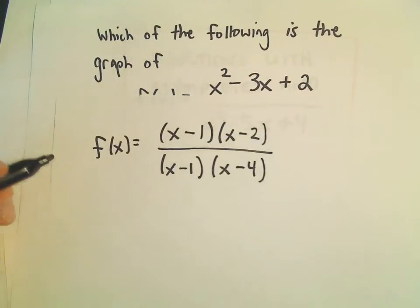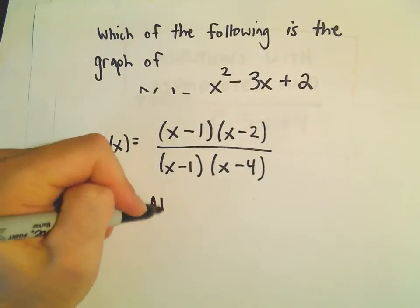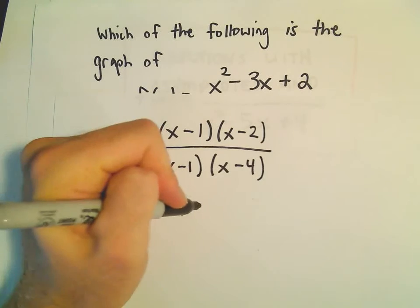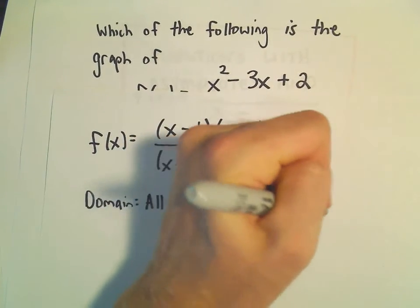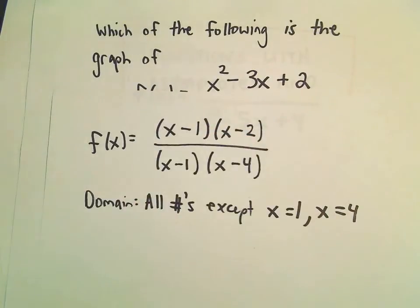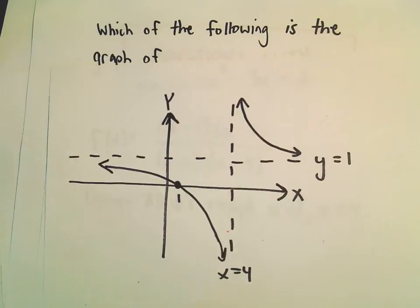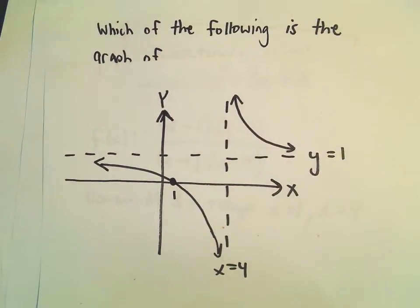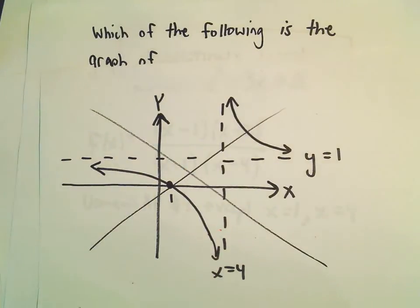Okay, so notice the domain will be all numbers. It'll be all numbers except x equals 1 and x equals 4. So I think that would already even rule out our last graph because there's no holes, this one's not undefined at x equals 1. It has an x-intercept. So that one can't be correct right off the bat.